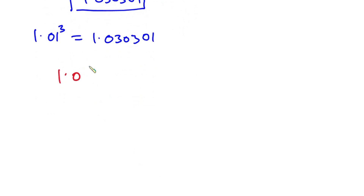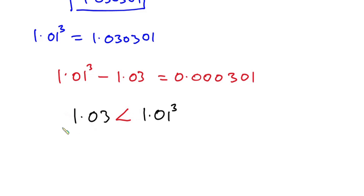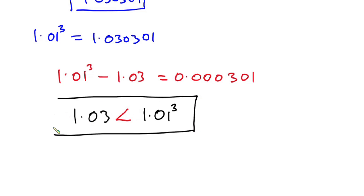The difference between 1.01³ and 1.03 is 0.000301, so we can conclude that 1.03 is less than 1.01³. In other words, 1.01 to the third power is greater than 1.03. I hope you found this video useful — please give it a thumbs up and subscribe. Thanks for watching!